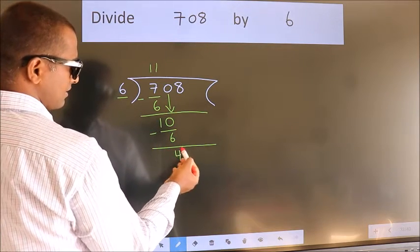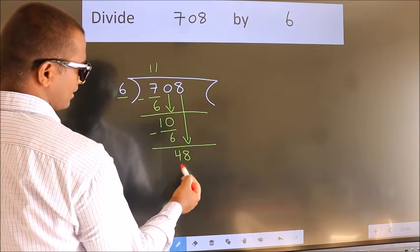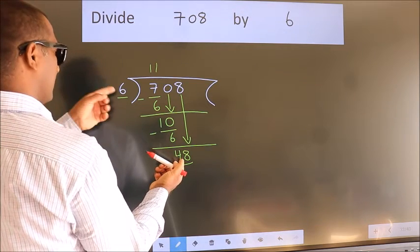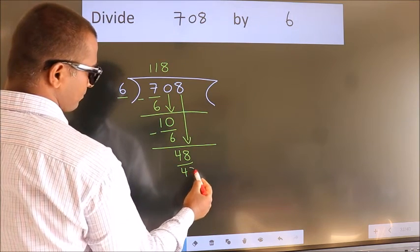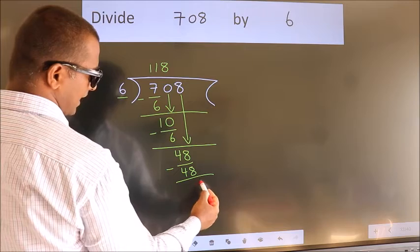After this, bring down the beside number. So 8 down. So 48. When do we get 48 in 6 table? 6 8's 48. Now we subtract. We get 0.